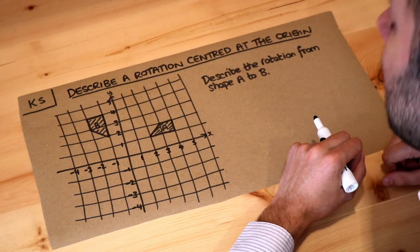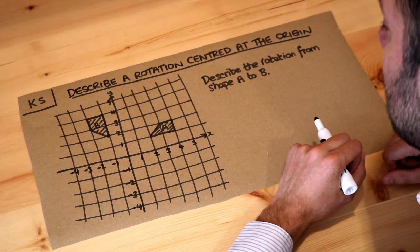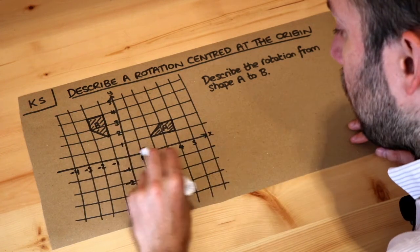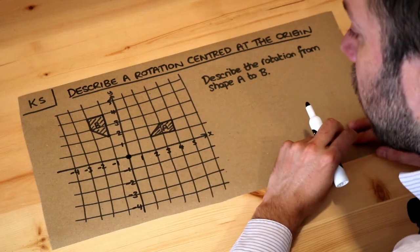Hello and welcome to Dr. Ross Mass's key skill video on describing a rotation centered at the origin. The origin just means the point (0,0), so this is the origin here.